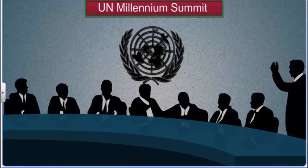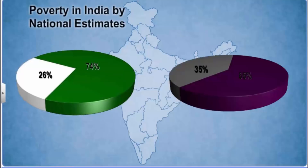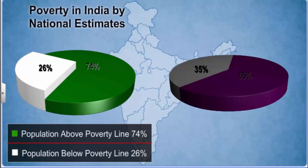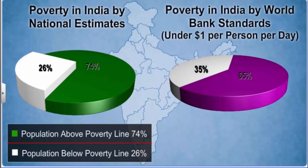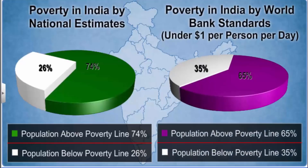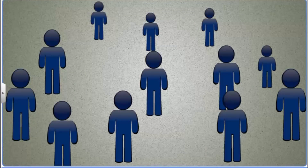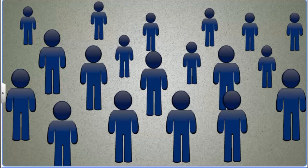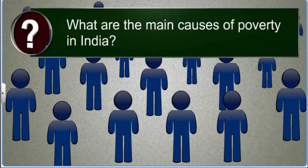Global leaders expressed their commitment to reduce poverty at the United Nations Millennium Summit held in September 2002. Leaders from 189 countries signed a declaration pledging to reduce the number of people living below one US dollar a day to half of its 1990 figure by 2015. As per national estimates, 26% of the population in India lives in poverty. Applying the World Bank standard, this figure goes up to around 35%. These figures raise the question: what are the main causes of poverty in India?